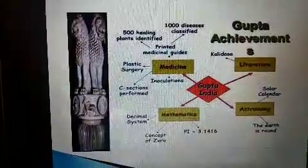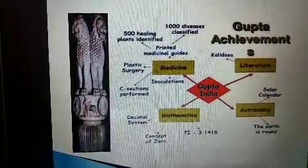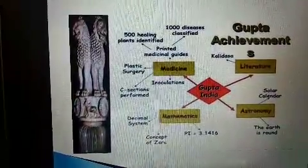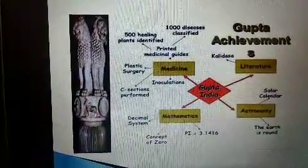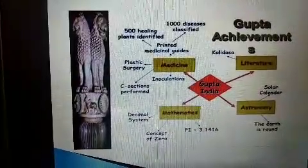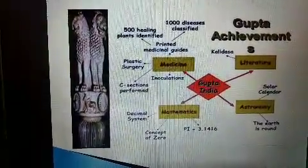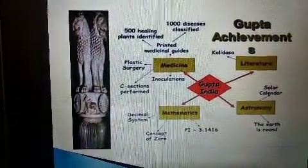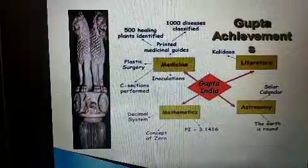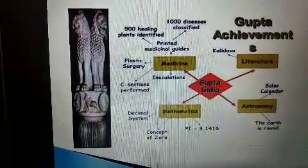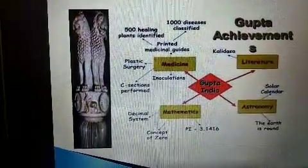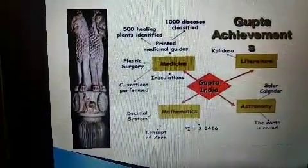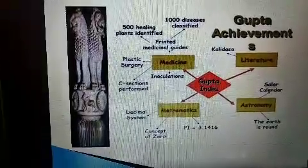Have a look at this picture — the fields in which they achieved success are written here. In Medicine: printed medicinal guides, plastic surgery, C-section performed. In Literature: about Kalidas. In Astronomy: solar calendar, and it was proved that the earth is round. In Mathematics: concepts of zero and the decimal system were founded during the Gupta Dynasty. In Medicine also: inoculation, plastic surgery, 500 healing plants identified, and 1000 diseases were classified. These were all the successes achieved during the period of the Guptas. Thank you, children.